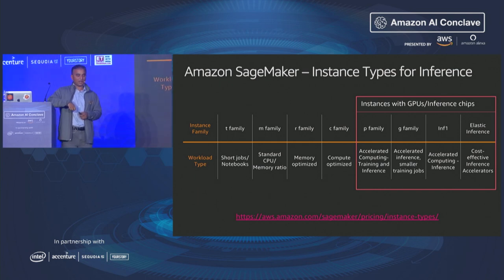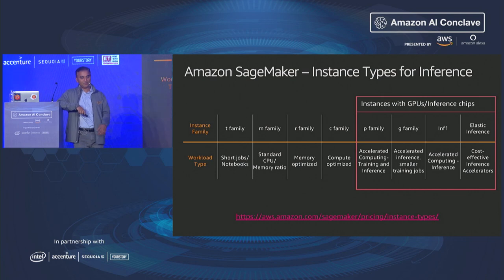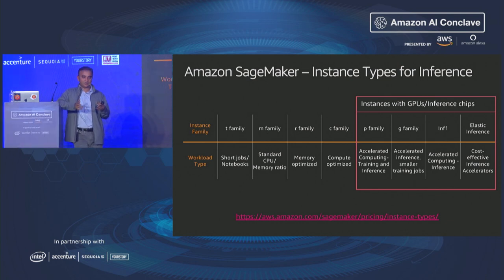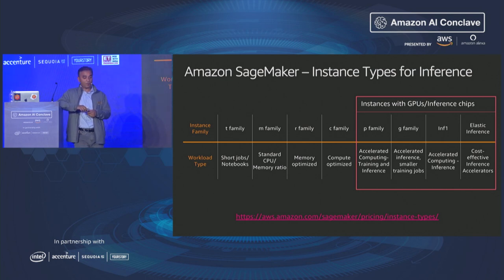For inference, you can use T, M, R, and C class instances for compute-based hosting, but we also have GPU and other specialized instances. P instances are for accelerated computing where you need GPU acceleration during inference — computer vision models like SSD, semantic segmentation, and NLP models like BERT typically use P-type instances. If you don't need that much horsepower, check your GPU utilization and pivot to the G family, which is purpose-built for inference rather than training, giving a better price-to-performance ratio.